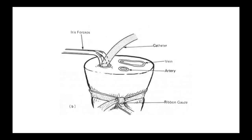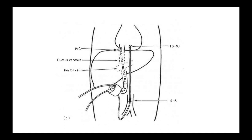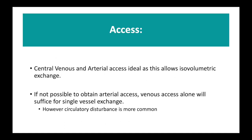We all know from NLS how to put in umbilical venous lines. It's useful if you can put in both an umbilical venous line and an arterial line, because isovolumetric exchange is the best way of doing an exchange transfusion. Central venous and arterial access is ideal as this allows isovolumetric exchange, but if it's not possible to obtain arterial access, it is still possible to do an exchange using venous access alone, as long as you've got the catheter inside a large vessel.